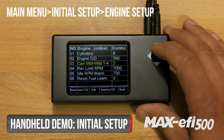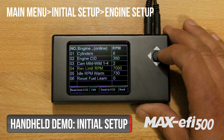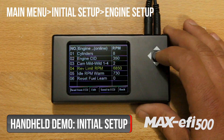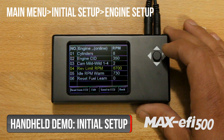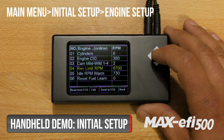Next, you'll choose your rev limit. This is where the system will cut fuel off. A fuel cutoff is not as hard as an ignition cutoff, so be aware that residual fuel present in the system after the cutoff would still briefly run the engine above your desired RPM limit, since the ignition is not cut.